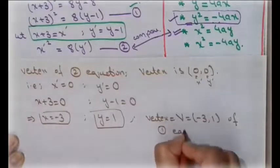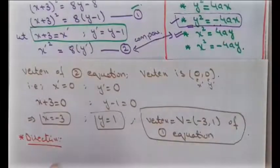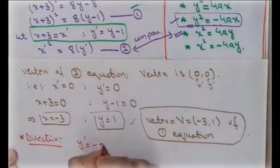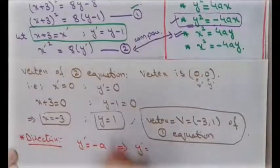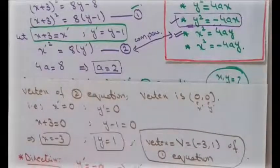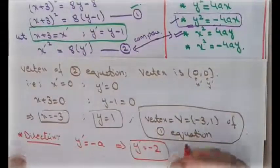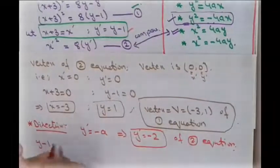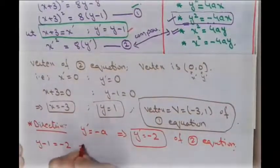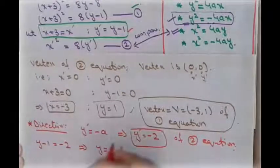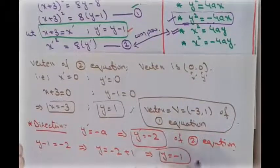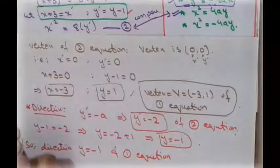To find the directrix of the second equation: for an upward-opening parabola, the directrix is y′ = −a = −2. This is the directrix of the second equation. Substituting back: y − 1 = −2, so y = −2 + 1 = −1. The directrix of the first equation is y = −1.